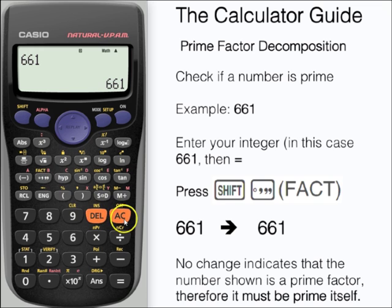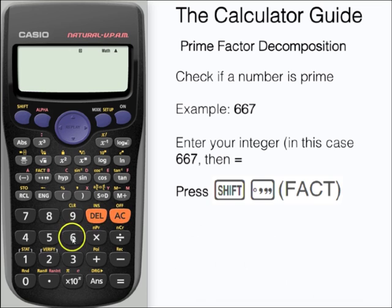Let's try another number in the region of 661. Let's try 667. Enter the number and press equals, and then shift and fact.